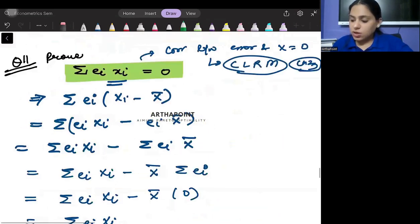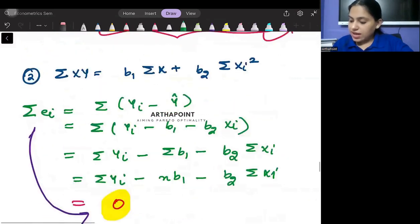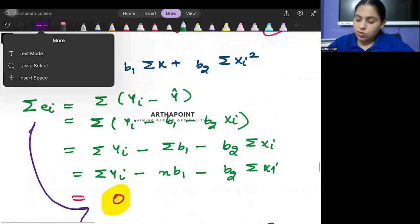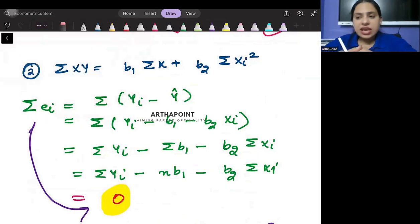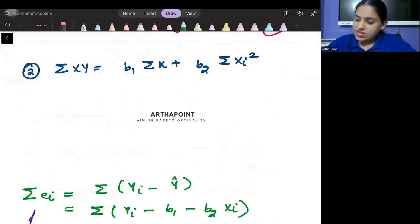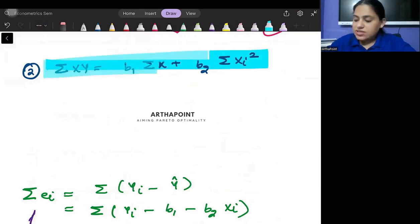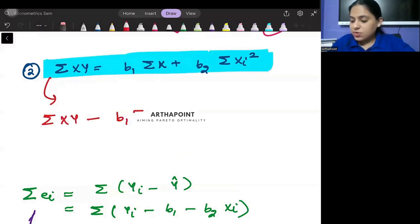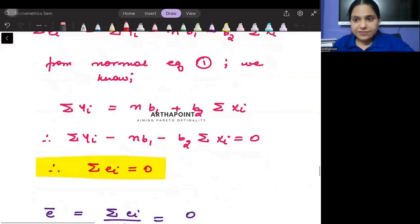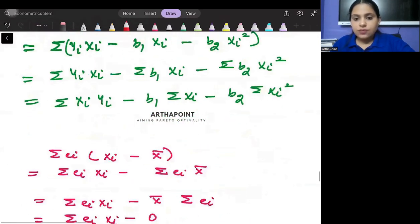Now go to the second normal equation. The second normal equation that I told you in the last video was this: ∑Xi*Yi = B1∑Xi + B2∑Xi². So from here can't I say that ∑Xi*Yi - B1∑Xi - B2∑Xi² will be 0? So if I use that fact in this question, I recognize that this will also be 0, and that's the proof of it.